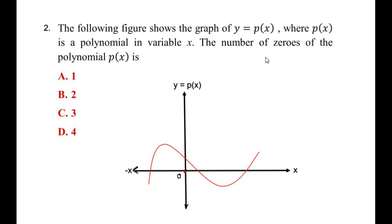We can see the curve touches the x-axis at a first point, again at a second point, and at a third point. So we have the first, second, and third roots or zeros of the given polynomial. The curve has to touch the x-axis to count the zeros. Here our answer is 3, because the curve touches at 3 points on the x-axis.